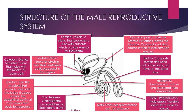The testes produce spermatozoa, which is the proper word for sperm cells, and testosterone, which is the male sex hormone. That is why the testes are the male sex organ. The penis is the male reproductive organ. So if asked what is a male sex organ, you say testes; if asked what is a male reproductive organ, you say the penis.